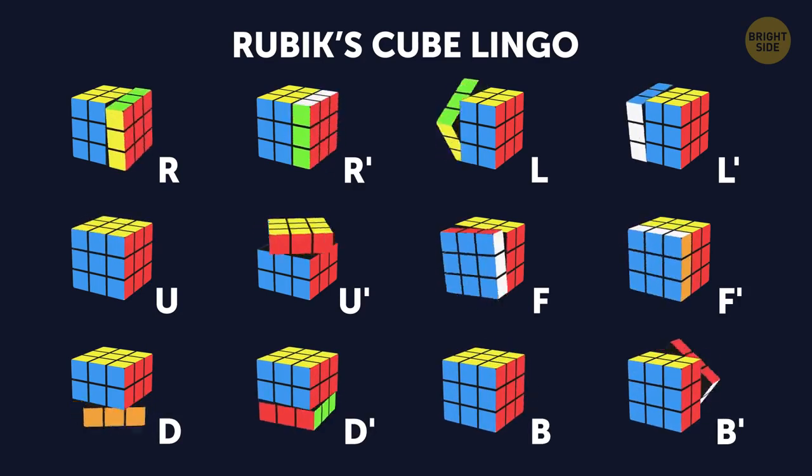R is right, L is left, U is up, D is down, F is front, and B is back.